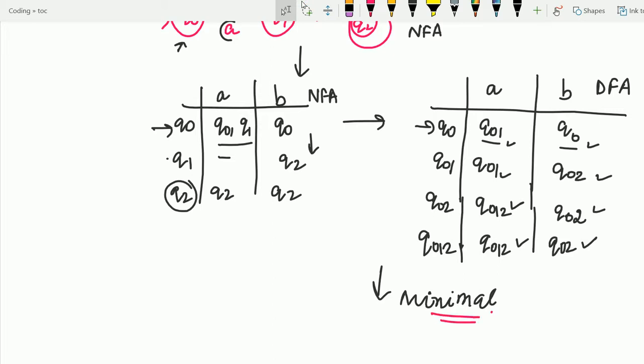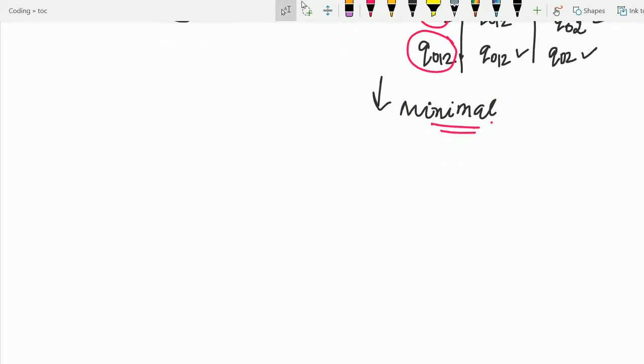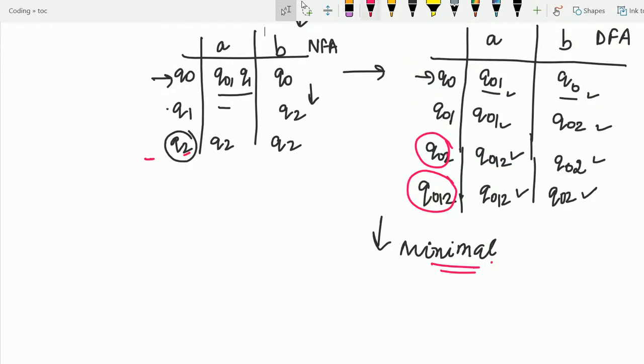Minimal algorithm you can say, first of all, the final states are the ones that contain Q2. So Q2 is present in this and this. So these are the final states in the DFA. Since Q2 is final state in this NFA, you are taking wherever 2 is present, mark those as the final state. So let's make the minimal DFA for the given DFA. So we are using this table.